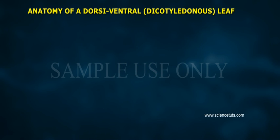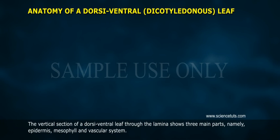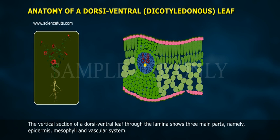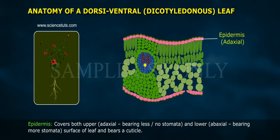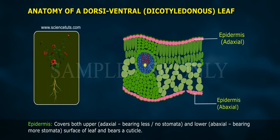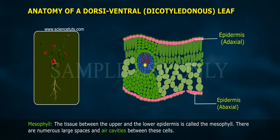Anatomy of a dorsiventral dicot leaf. A vertical section of a dorsiventral leaf through the lamina shows three main parts: epidermis, mesophyll, and vascular system. Epidermis covers both the upper adaxial surface, bearing fewer stomata, and the lower abaxial surface, bearing most stomata, and bears a cuticle.